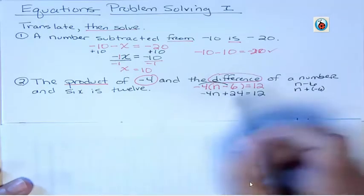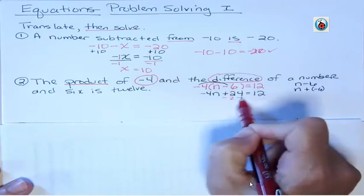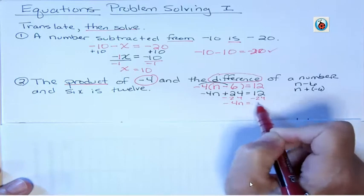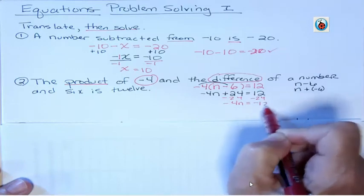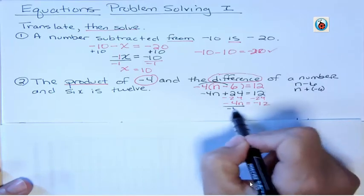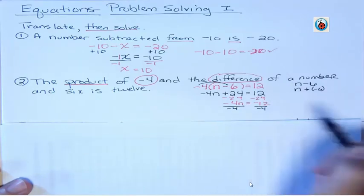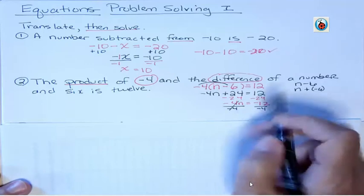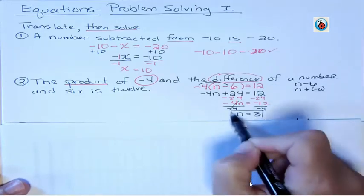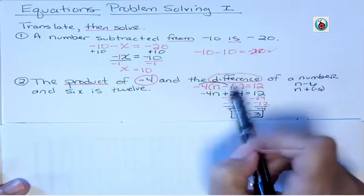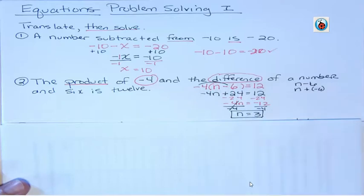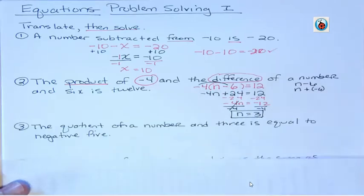Now I want to subtract that 24 from both sides to get the variable term by itself. And that gives me negative 12. I have more negatives than positives. And then I want to get rid of the coefficient, which is negative 4. So I want to divide both sides by negative 4. And when you have a negative divided by a negative, they go away and you get n equals 3. So n equals 3 is the answer. If they asked me to translate, I would just give them this piece. If they asked me to solve, then I'd go ahead and do this piece. We're doing both translating and solving here.